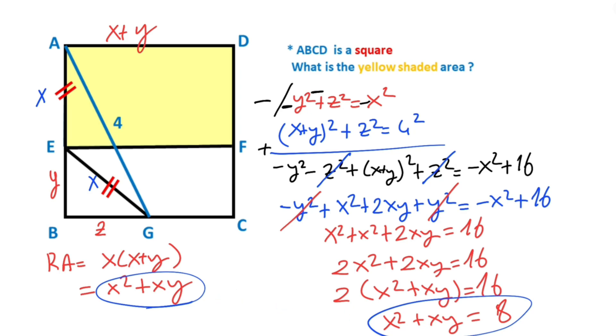That means the yellow shaded area equals 8 square units.